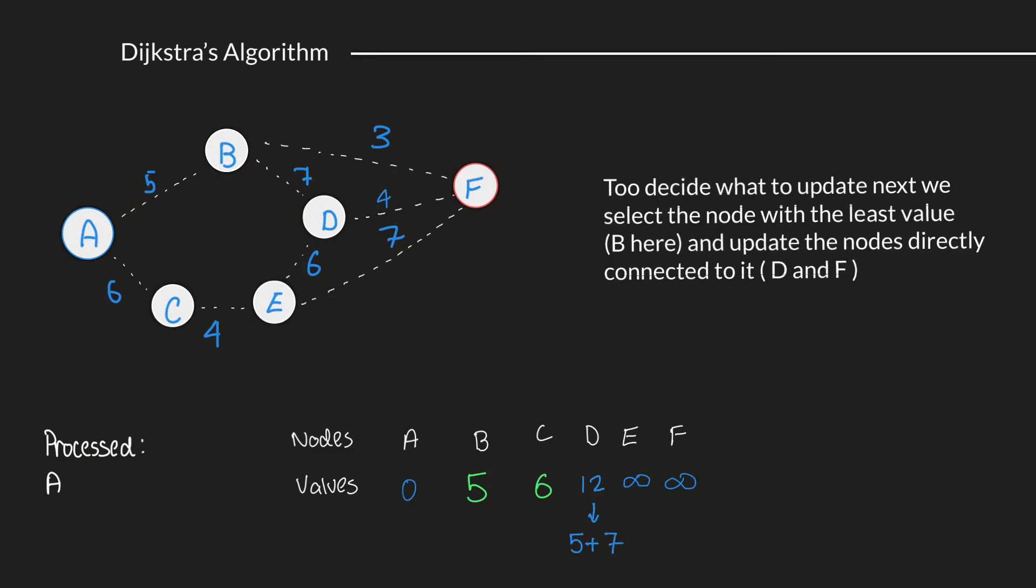Now let's look at F. The shortest path from A to F, right now, what we know, would be A to B, and then B to F. So, that would be 5 plus 3, which is 8, which we've jotted down.